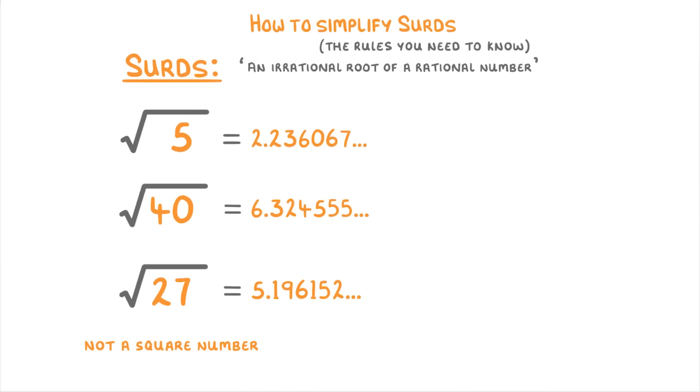Whereas if we had the square root of 9 or the square root of 36, these numbers don't count as surds because 9 and 36 are both square numbers, with root 9 being 3 and root 36 being 6.